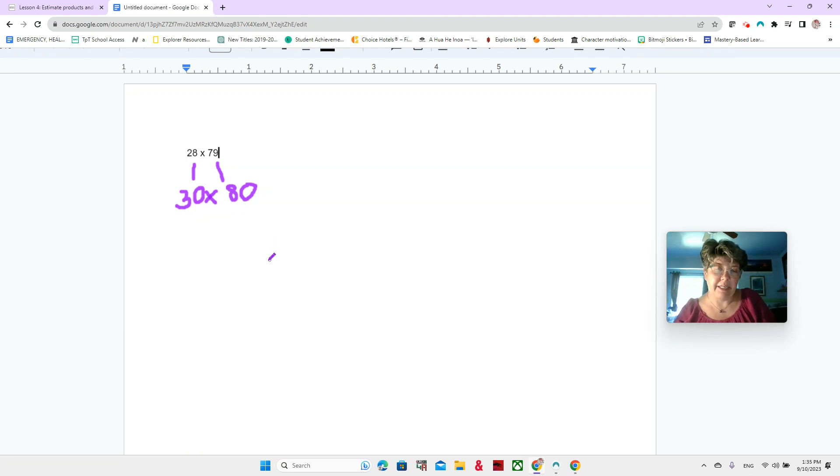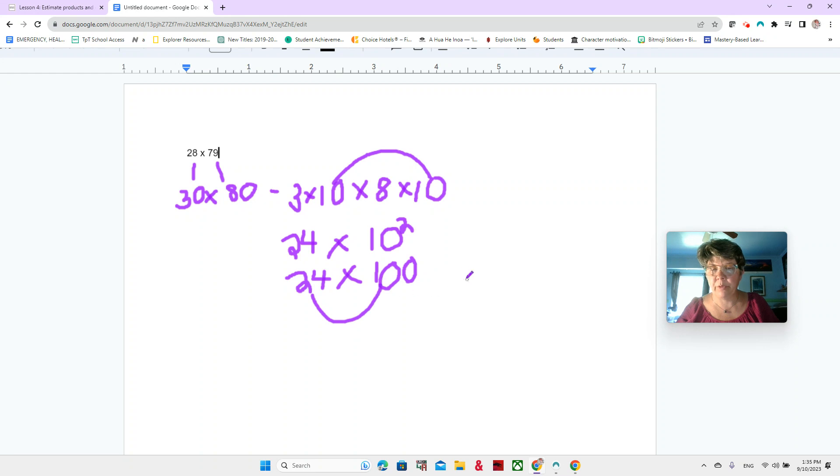Okay. And then we could multiply the two of those together. Now, what is 30 times 80? We could think of it as three times 10, because 30 is three times 10 times eight times 10. And then you could take these two tens and say, well, that's 10 to the second power. Remember exponents. And three times eight is 24. And 10 to the second power is the same as 100. 10 times 10 is 100.